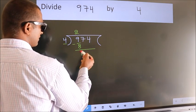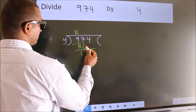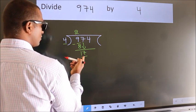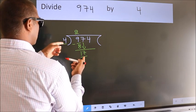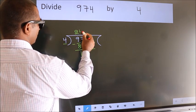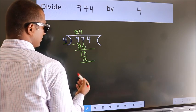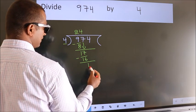After this, bring down the beside number. So 7 down. So 17. A number close to 17 in 4 table is 4 4s, 16. Now we subtract. We get 1.